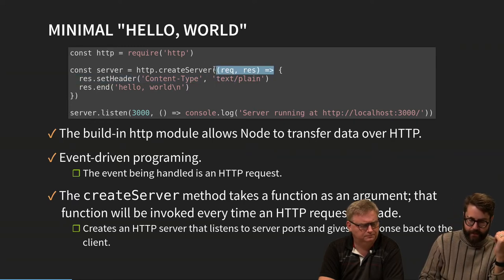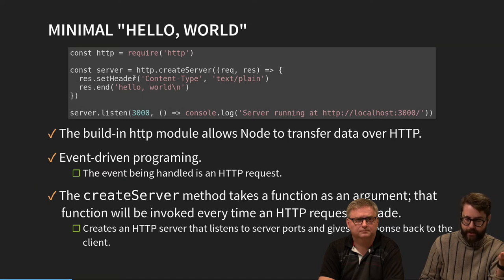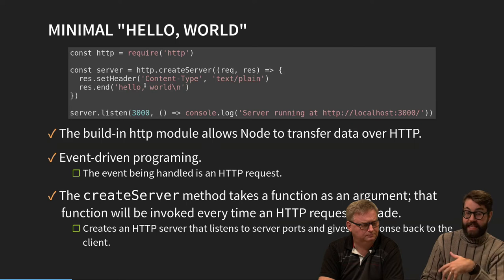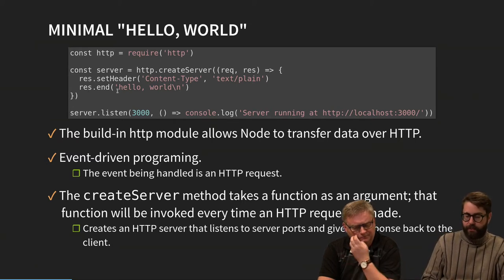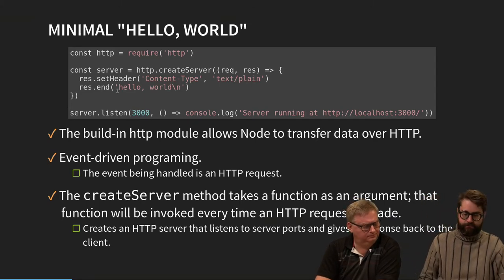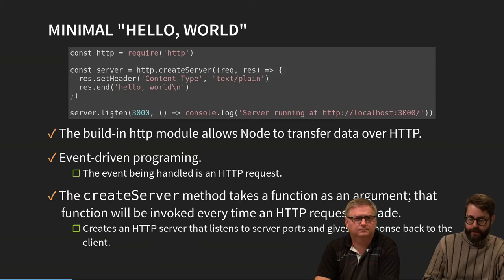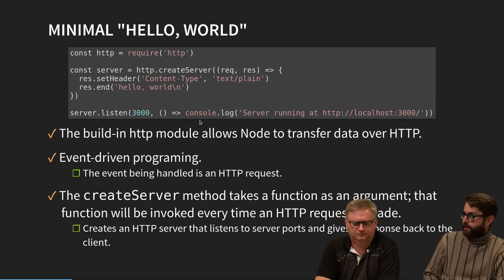This is just a callback function. We create a server, and when we get a request this function is executed. We set a header on the response object telling the client we are sending a text/plain MIME type of data. We send a string back to the user and end the request. This should probably be valid HTML, but the browser can handle plain text and just show it.